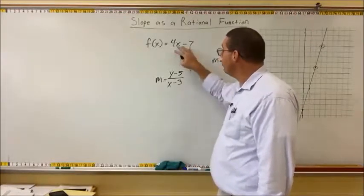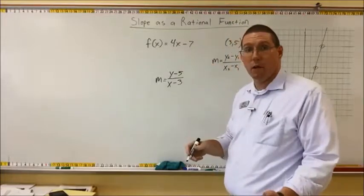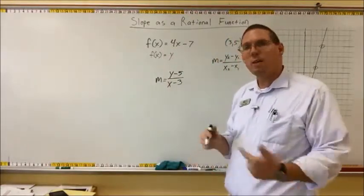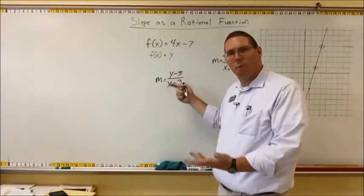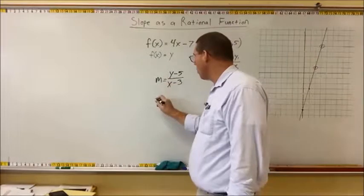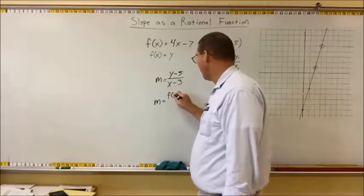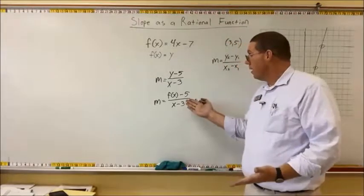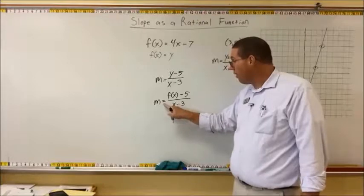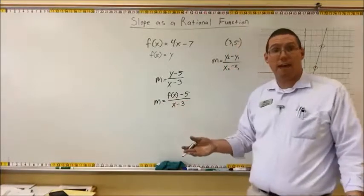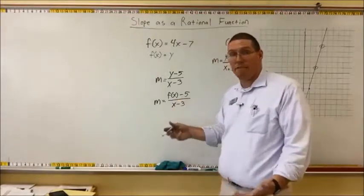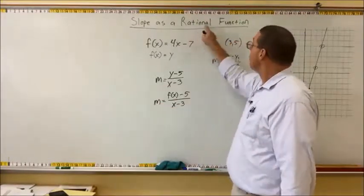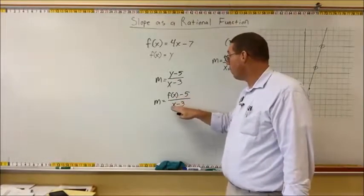Okay? But here's the interesting thing. If we go back, if we do have the line equation, f of x is equal to 4x minus 7, well, don't we know, isn't f of x the same thing as y? Isn't y equal to f of x? So can't we take the y out, and instead of putting a y there, can't we put f of x in there? So now, our slope becomes m equals f of x minus 5 over x minus 3. Now, slope is strictly a function of x values, because we know that f of x is a function of x.